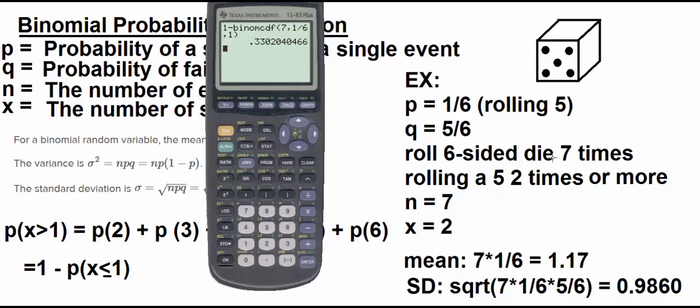Because when you use the binomcdf function in your calculator, it's always less than and equal to. So you got to make adjustments accordingly.